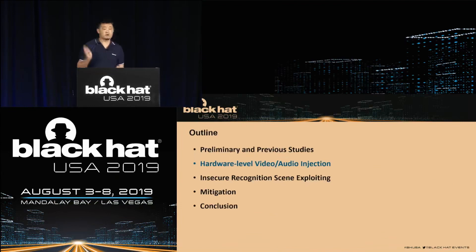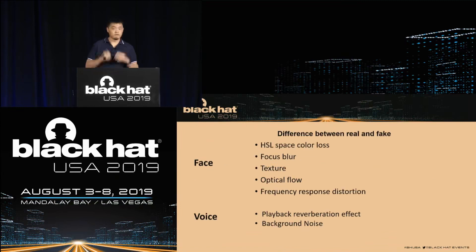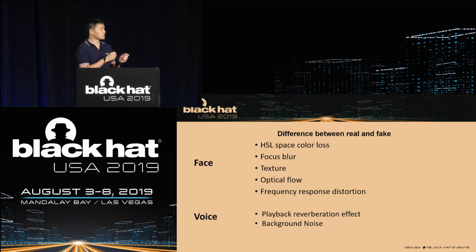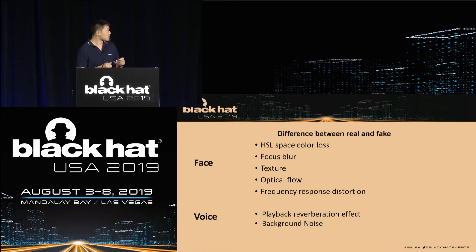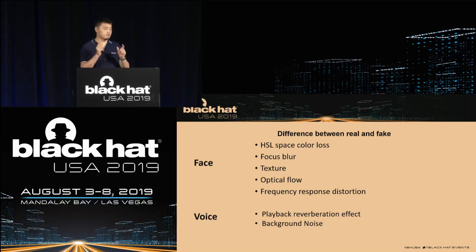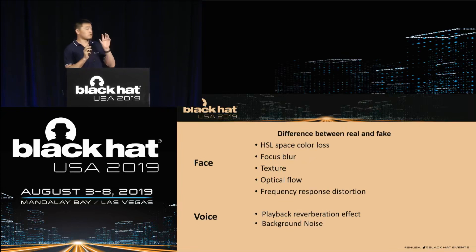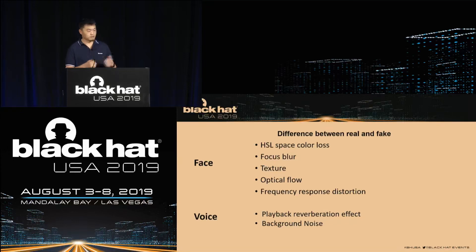Our research is mainly focused on bypassing liveness detection. Let's look at the difference between real and fake biometric information during authentication. When using a face, a fake one loses some HSL color space information, because when using a video or photo, some colors are lost when the camera captures them. There is also focus blur, and the texture is not the same. Optical flow is another important detection method.